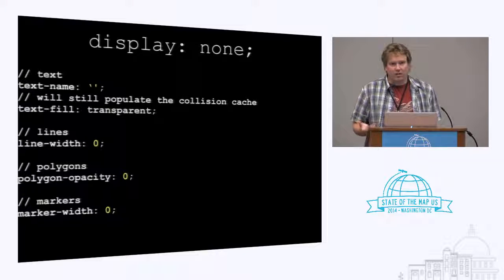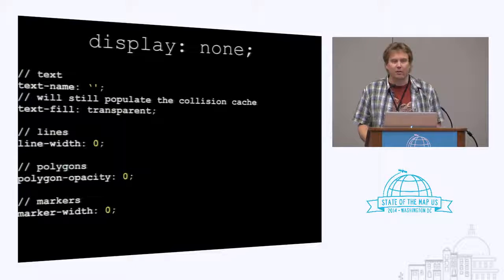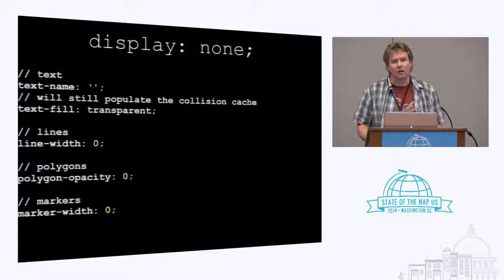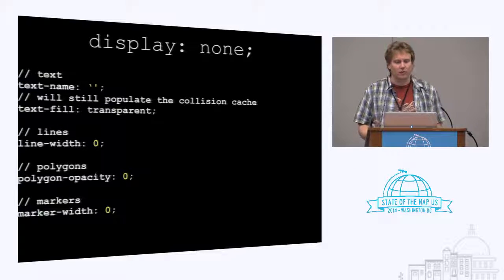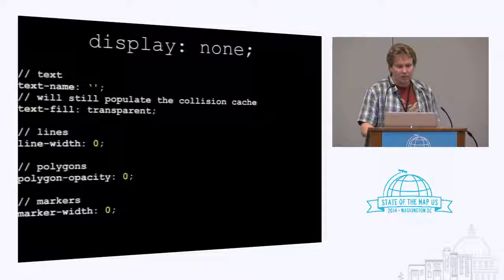For lines, you just set the line-width to zero and you have nothing. For polygons, you can set the opacity to zero, though they're still present so if you're using UTF grid they'll still show up there. Markers disappear when you set them to a point-size of zero or a width of zero — they become a point that just disappears.